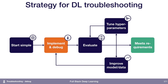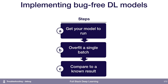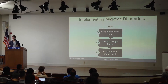You've chosen really simple default choices for your problem and your network, and now it's time to sit down and actually implement those. The steps here are: first, you need to actually get your model to run at all, which in deep learning can be not as trivial as it sounds. Then I recommend overfitting a single batch of data. And lastly, you should compare to a known result to give you more confidence that your model is performing as well as you think it should be.